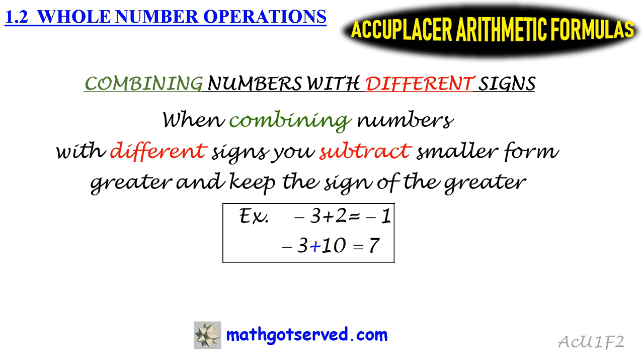Now what will the sign of the final result be? Well, since the bigger number is 10 and has a positive sign, that means our final answer will have a positive sign. That's why we have positive 7 as a result of negative 3 combined with positive 10.